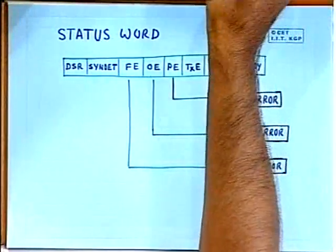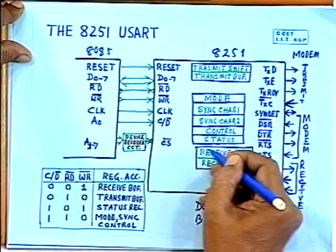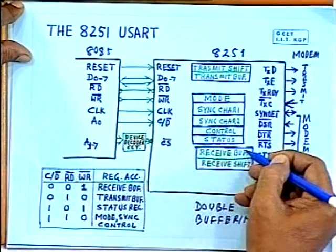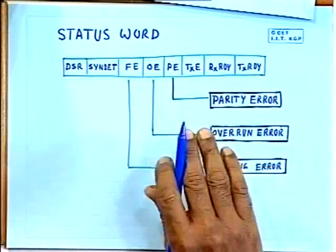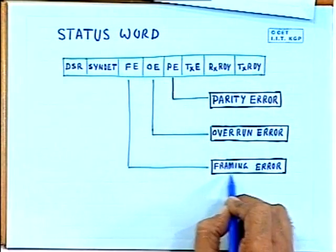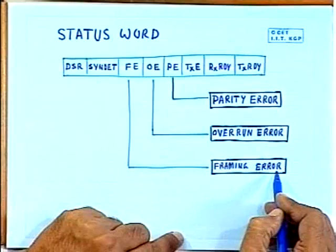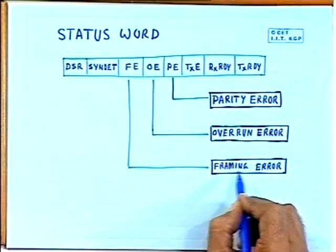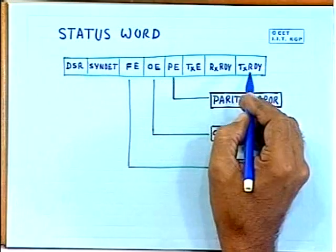The overrun error reflects improper synchronization between reading and receiving. Framing error arises because in asynchronous mode, the stop bit should be 1; if instead a 0 is received, it is a framing error. So if you do not receive data in the proper frame order, the framing error bit will be set. These error situations are reflected in the status word along with the various signal line statuses.